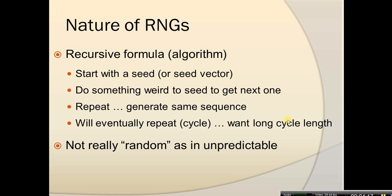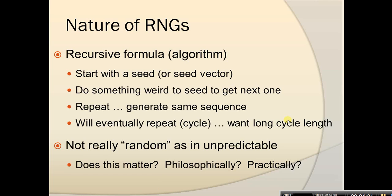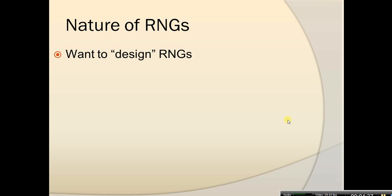The way a random number generator produces random numbers is through a recursive formula, which is the heart of the algorithm. We start with a seed or seed vector and apply something to the seed to get the next value. We repeat this process to generate the sequence, and eventually the sequence will repeat itself — we call this cycling — so we want a long cycle length.